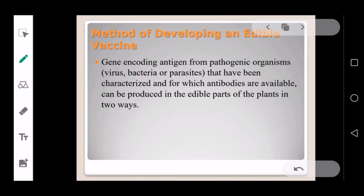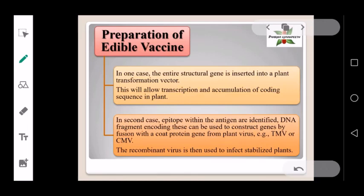Genes encoding antigens from pathogenic organisms like viruses, bacteria, or parasites that have been characterized and for which antibodies are available are produced in the edible parts of plants in two ways. In the first method, the entire structural gene is inserted into a plant transformation vector, which allows transcription and accumulation of the coding sequence in the plant.